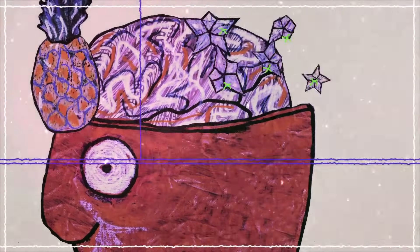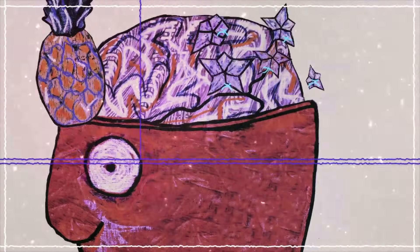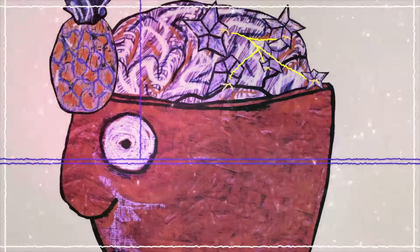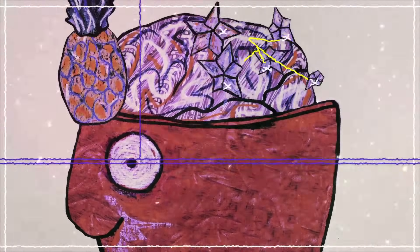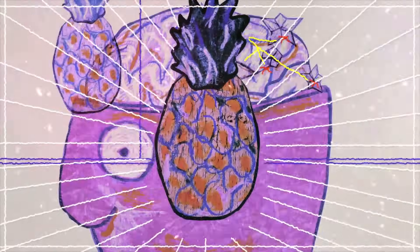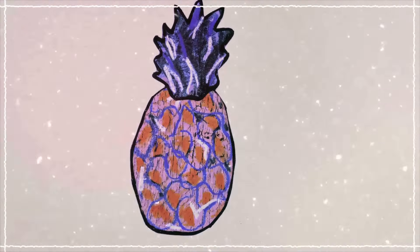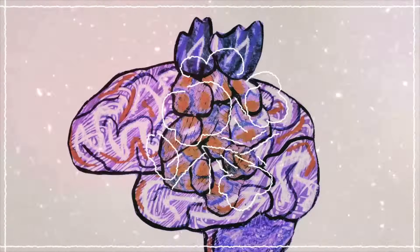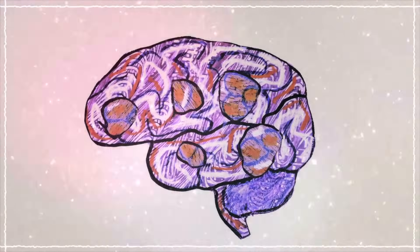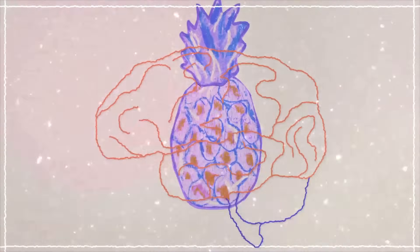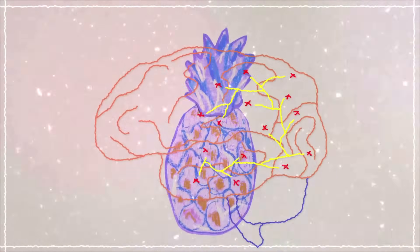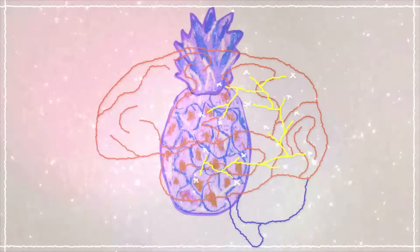This synchronous firing strengthens the connections between that set of neurons, linking them together into what's known as a neuronal ensemble, in this case the one for pineapple. In neuroscience, this is called the Hebbian principle. Neurons that fire together, wire together. If you try to imagine a pineapple later, the whole ensemble will light up, assembling a complete mental image.